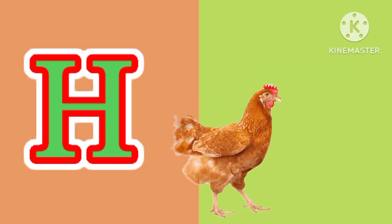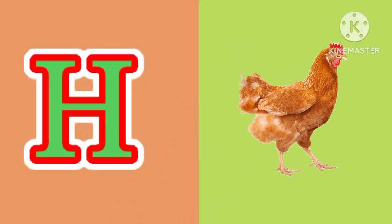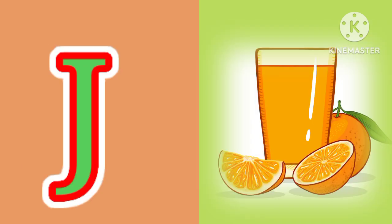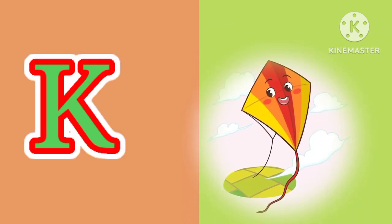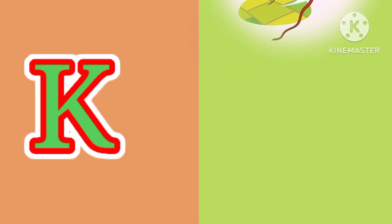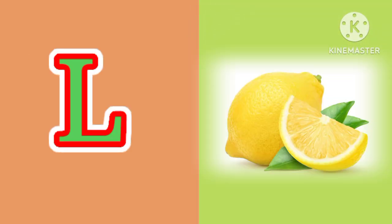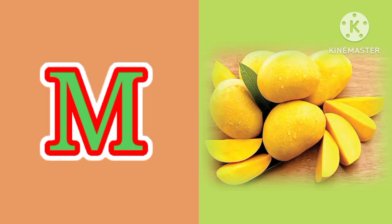H for hen, I for igloo, J for juice, K for kite, L for lemon, M for mango.